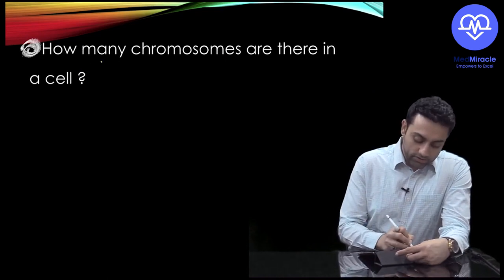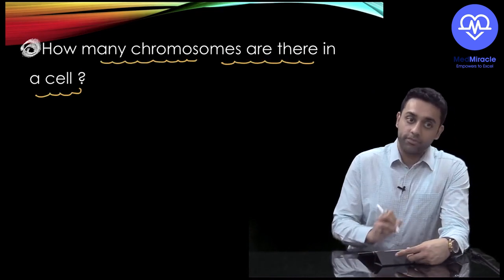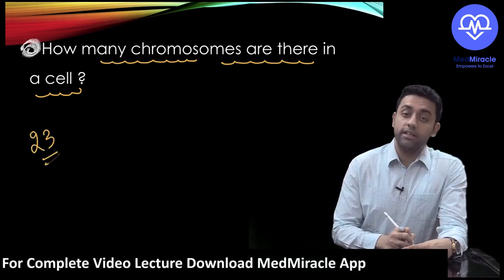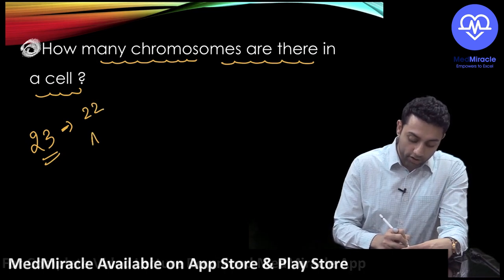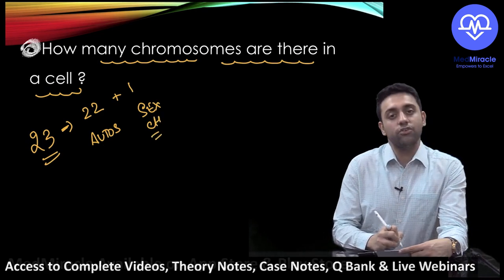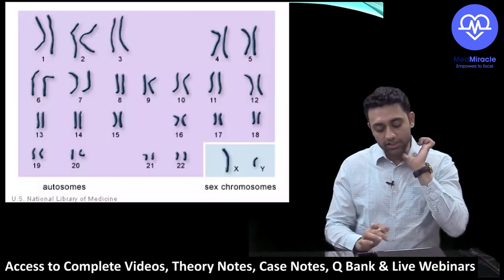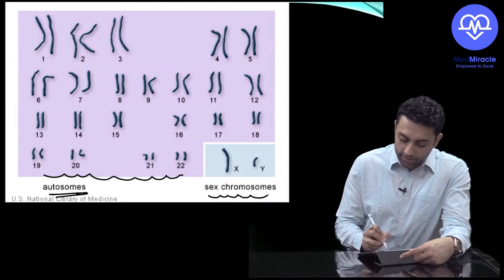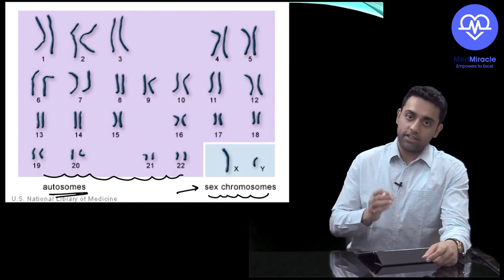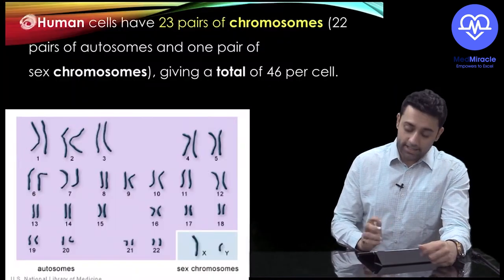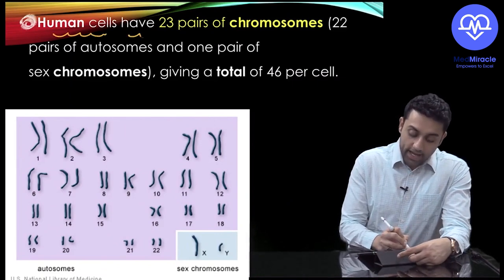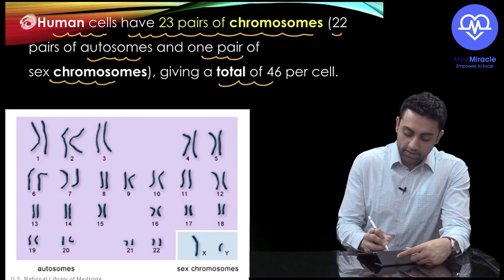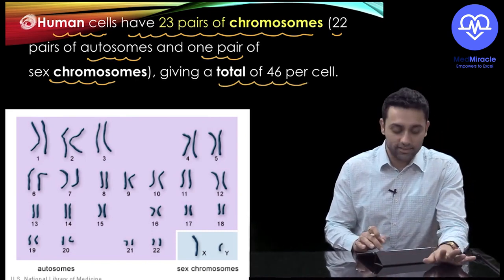In Down syndrome, how many chromosomes are there in a cell? Normally we have 23 pairs of chromosomes — 22 pairs of autosomes and one pair of sex chromosomes — giving a total of 46 chromosomes per cell. This picture shows all 22 autosomes and the one pair of sex chromosomes, totaling 23 pairs or 46 chromosomes. This is the basic concept that applies to normal humans.